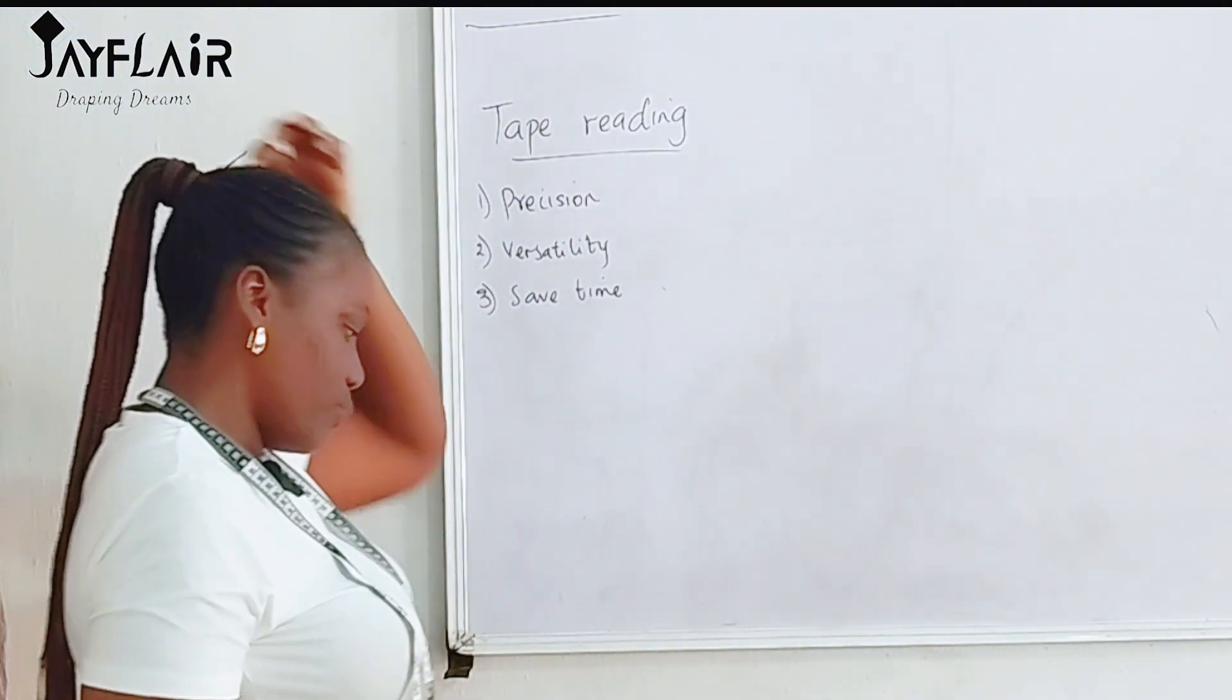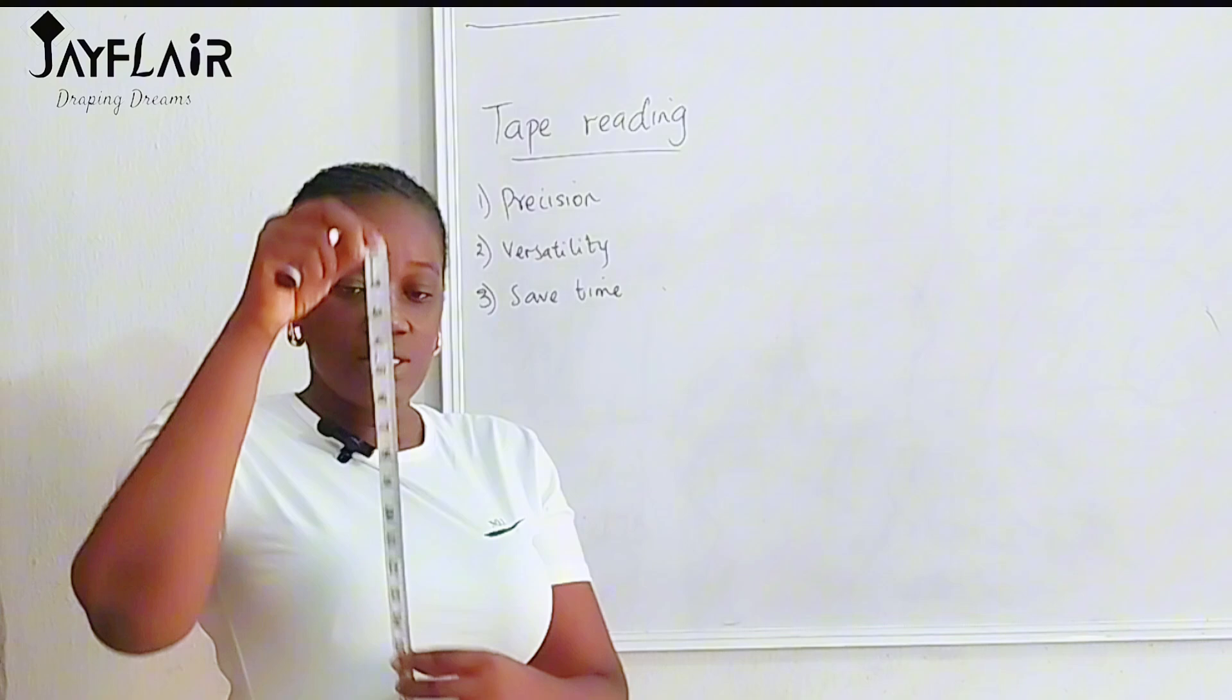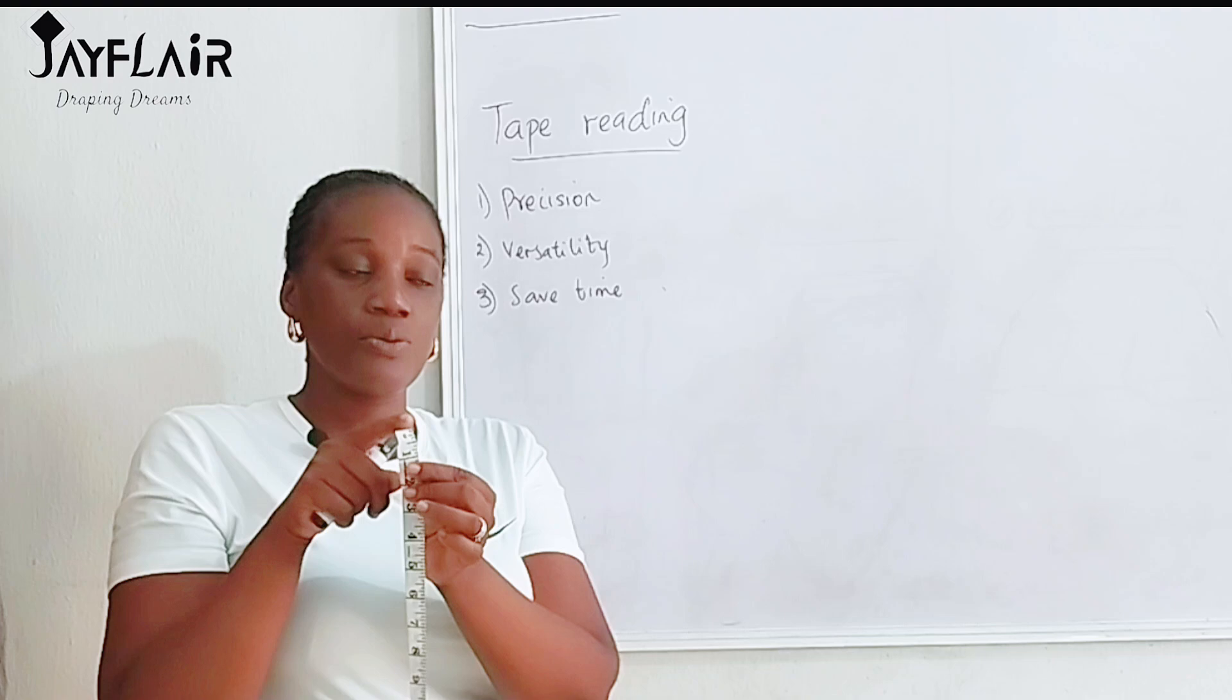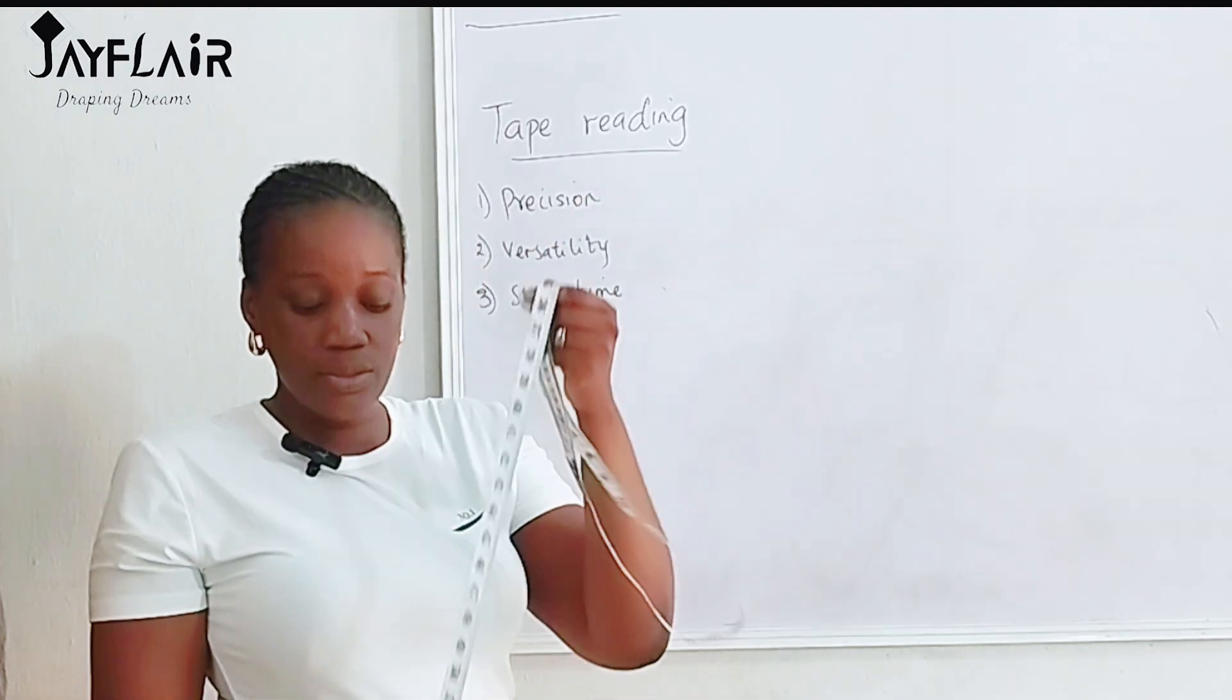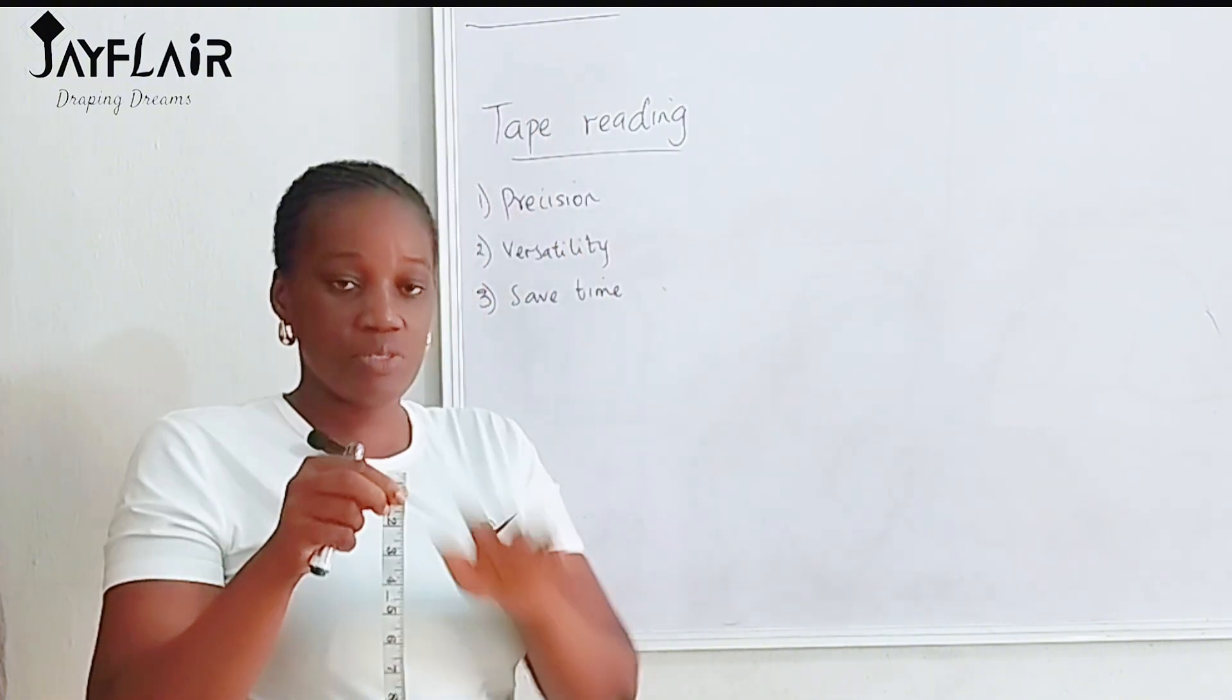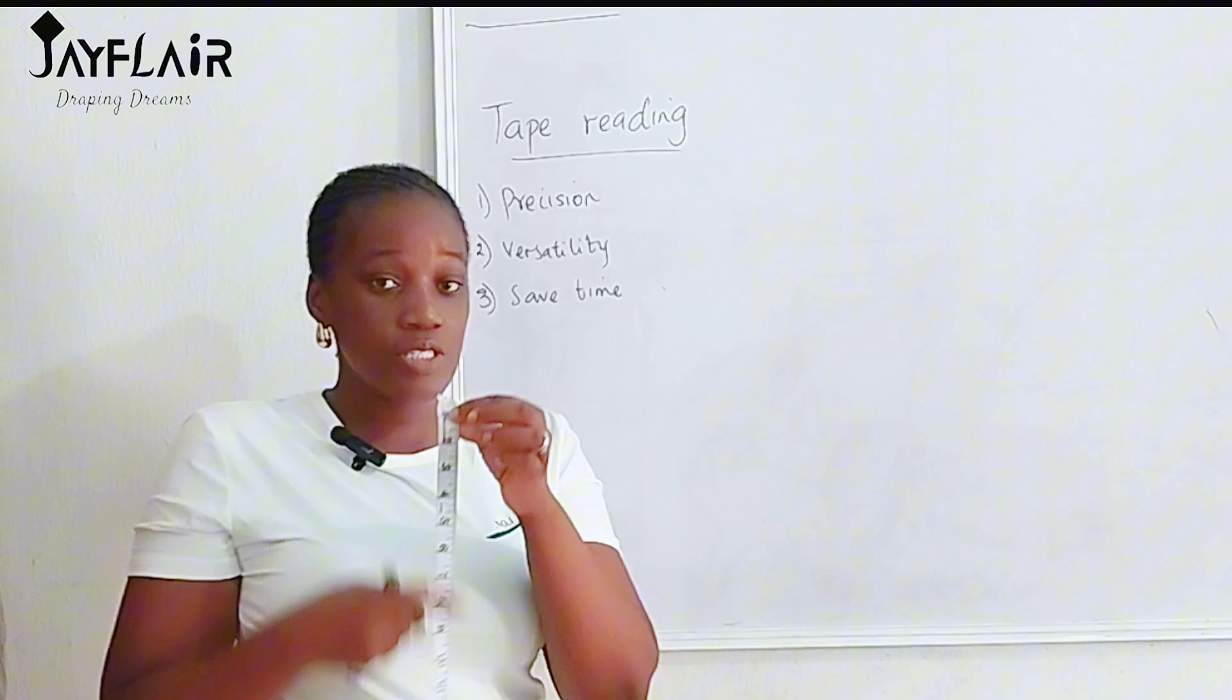So how do we now read the measuring tape? If you look at the measuring tape, you'll see that there are two sides. This side is the inches part, and the inches part is from zero. The top of the measuring tape is usually zero. Take note. And then it goes all the way to 60. We have the tape that runs from zero to 120, but this one I'm holding is just from zero to 60. That's for the inches part.